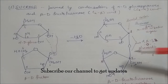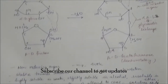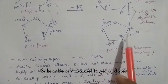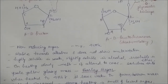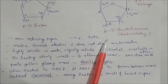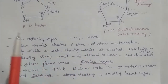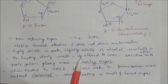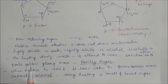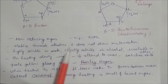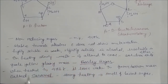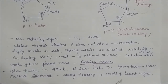Sucrose is dextrorotatory with a specific rotation of +66.5°. It is a non-reducing sugar. Its melting point is 458 K; it is stable towards alkali and does not show mutarotation. It is highly soluble in water, slightly soluble in alcohol, and insoluble in ether. When heated slowly it melts and on cooling solidifies into a yellow glass-like substance called barley sugar. When heated to 473 K it loses water and forms a brown mass called caramel.